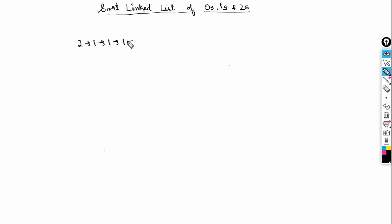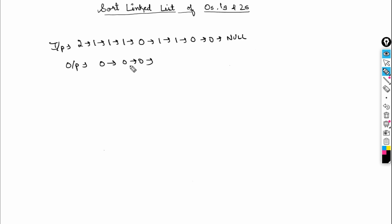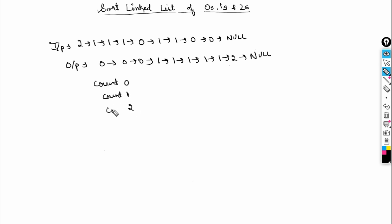Let's discuss with another example. Say this is my list with these elements, and this is null. The output should be: first three zeros, five ones, and one two. So we maintain count_zero, count_one, and count_two. Iterate over the input list and count zeros — there are three — count ones — there are five — and count twos — there are two.